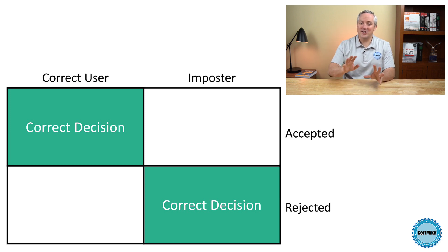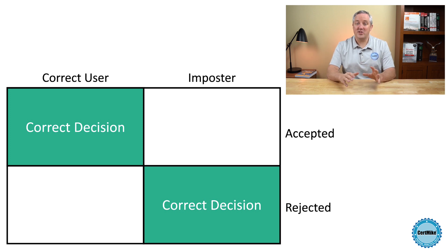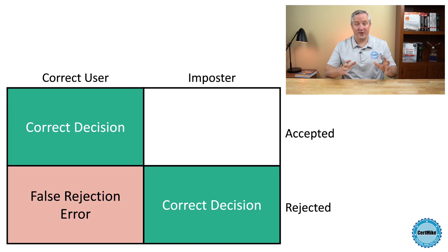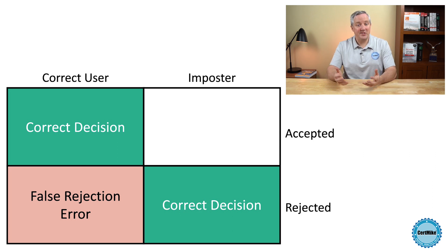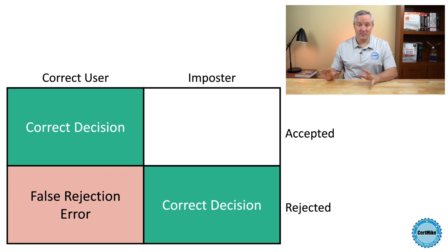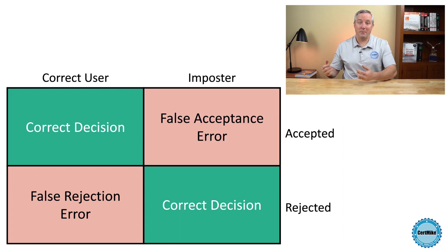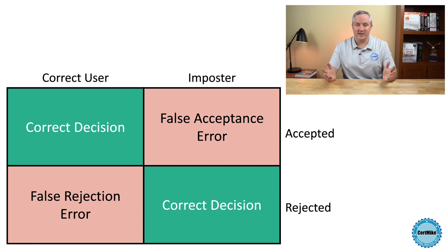However, if the system isn't working properly, it might make mistakes. If the system rejects a user who actually is legitimate, that's a false rejection — we've refused someone access who should have been granted access, and they're probably going to get upset. If the system accepts a user who is not who they claim to be, that's a false acceptance. That's a really serious error, because we've just granted someone access who shouldn't have that access.